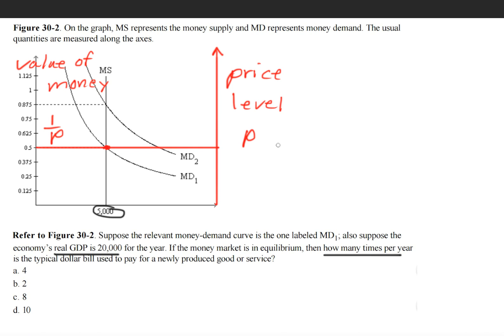So if we want to find what the real price level is, we'll do one over P, which is equal to one over 0.5, which is equal to two. This is the value for P. This is what we're going to use.